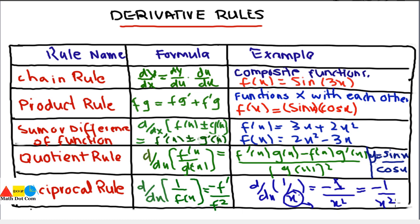So this is how you use these five rules when you come across the corresponding types of functions. You use the formula to solve such functions, and then apply the power rule to solve them. In the next lectures we will see with examples how to solve different types of functions using the chain rule, product rule, sum or difference rule, quotient rule, or reciprocal rule. Stay tuned.